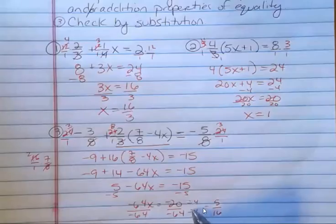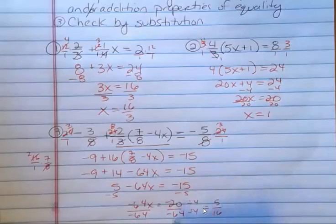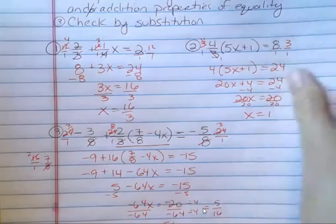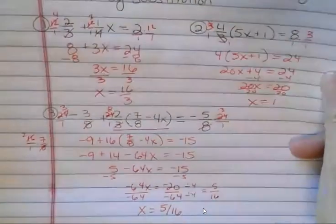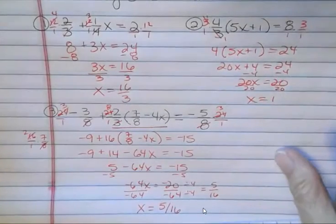But you could call it negative 4 and think about it that way. 20 divided by 4 and 64 divided by 4. And so we get 5 16ths. And again, you can plug that in to check it. Whoops, I went off screen here a little bit. Sorry about that. 5 16ths is our final answer.